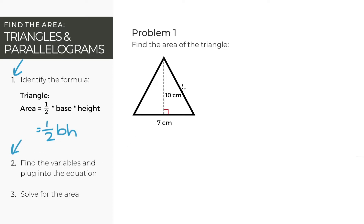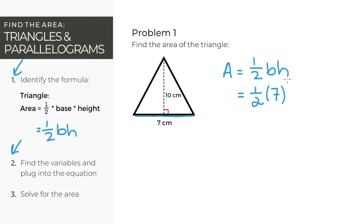For our second step, let's look into what that equation actually means. When we say base, it's the length of this line right here. You can think of the base as the side that the triangle is just sitting on, which in this case is 7 cm. Now for the height, it's the length of this line right here — how tall the triangle is. Take a point directly above the base and draw a straight line down. The lines for the base and height are always perpendicular to each other, meaning they are always at a 90 degree angle. From this diagram, the height of this triangle is 10 cm.